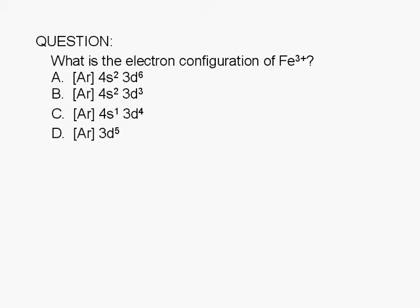What is the electron configuration of the ferric ion? A. Argon core 4s² 3d⁶. B. Argon core 4s² 3d³. C. Argon core 4s¹ 3d⁴. D. Argon core 3d⁵.